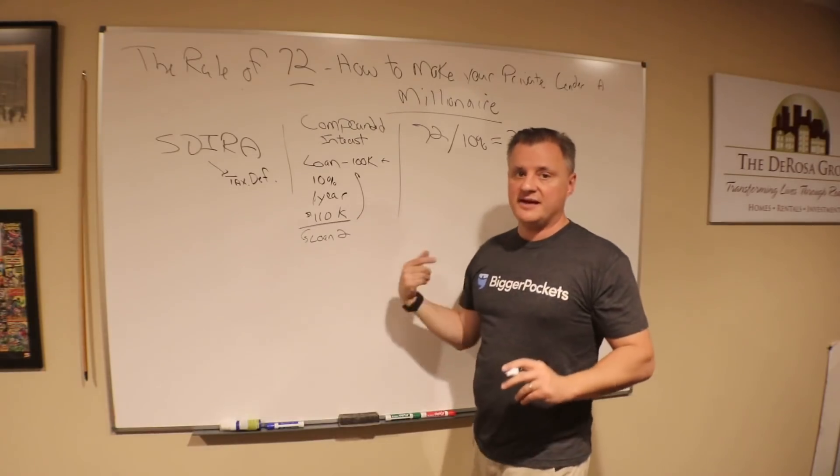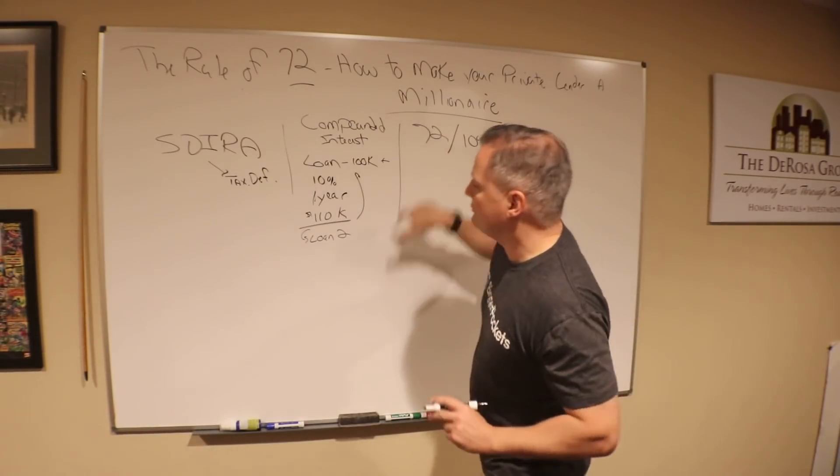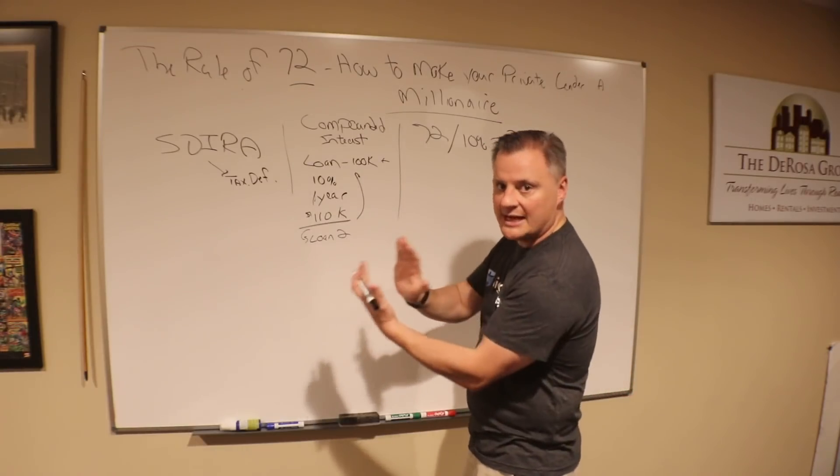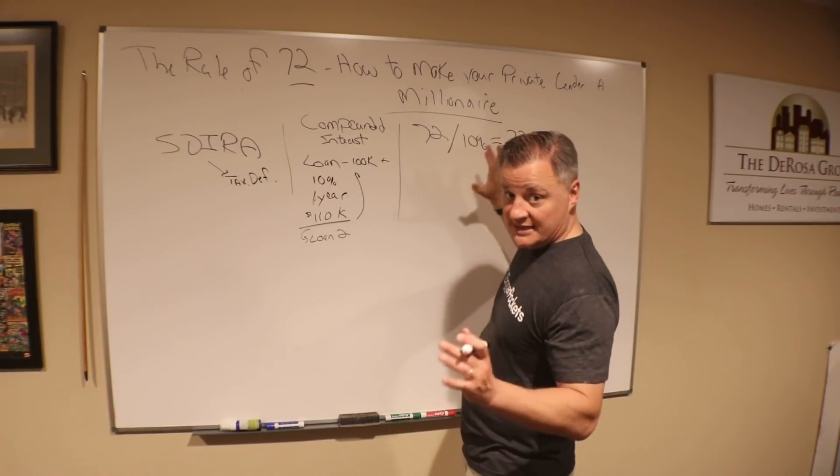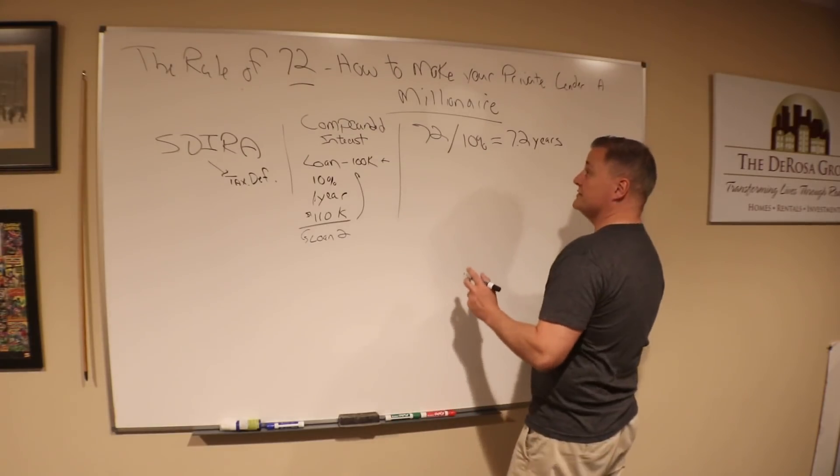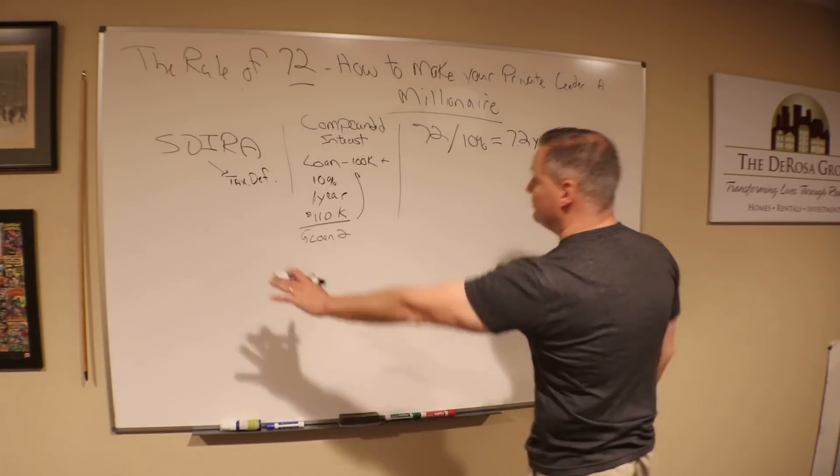That's if it were for a year. If you did a flip every six months and took the money and reborrowed it in a tighter timeframe, this compresses. If you can get deals done faster than a year, everything we're going to talk about compresses and you can make these people millionaires faster.